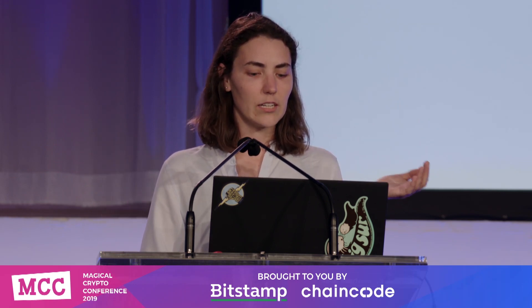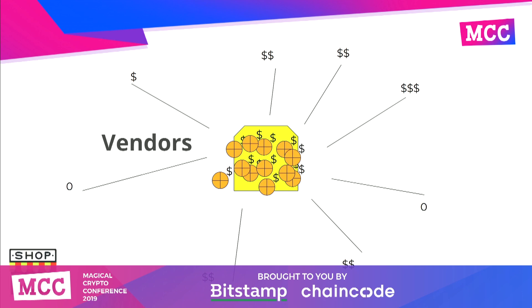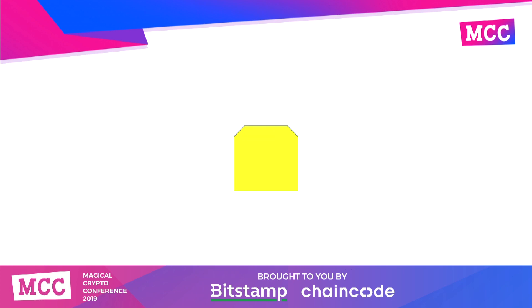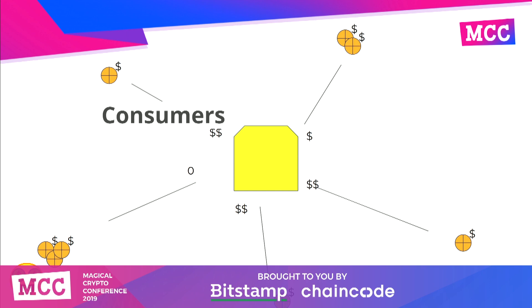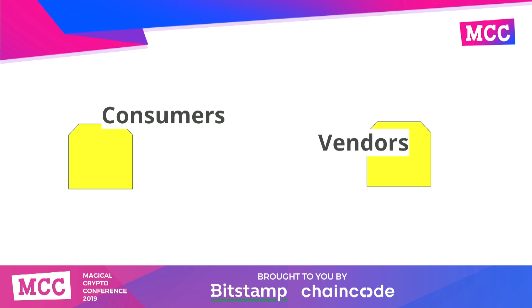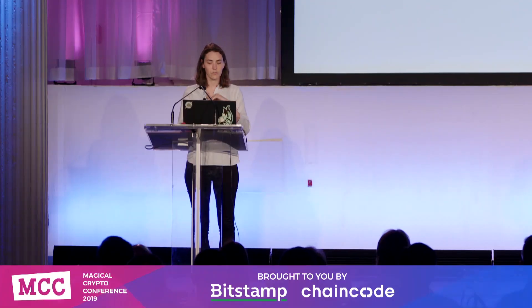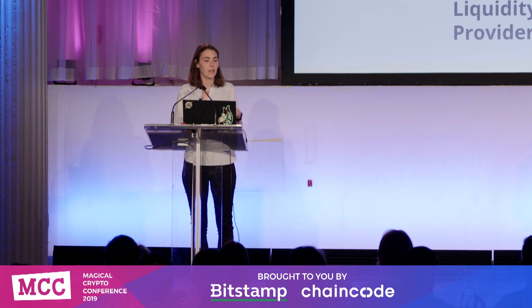We can classify nodes based on the types of payment flows they see. A vendor node has people connecting to it to make payments, so funds flow into the node — they're receiving Lightning payments and extending goods in exchange. A consumer node is trying to make payments out, sending payments out through their channels. In general, there are consumers and vendors, and the net flow of payments goes from consumers to vendors. Sitting in the middle are the nodes that ensure routes are available to get from consumers to vendors — we classify those as liquidity providers.